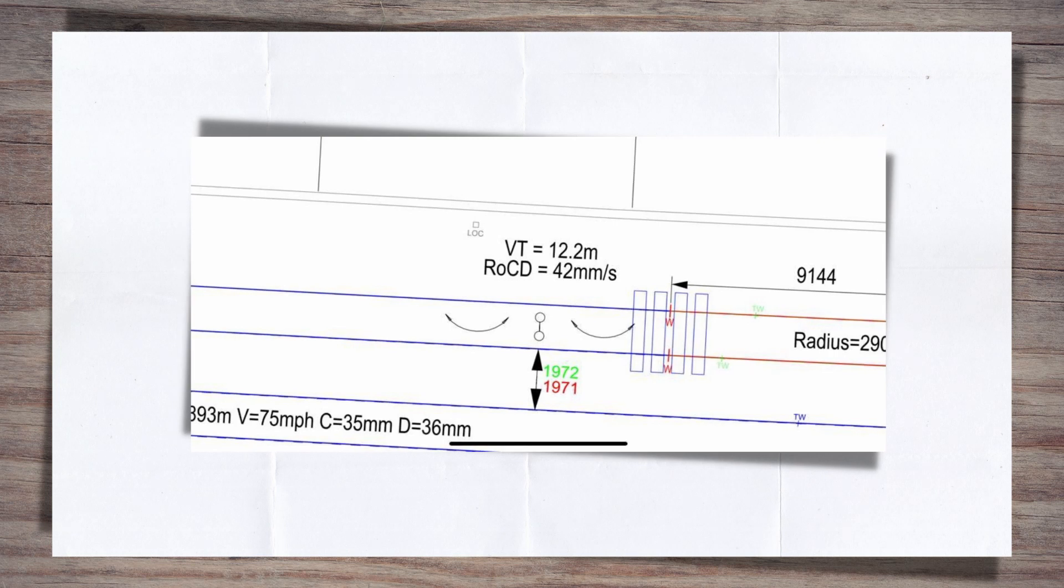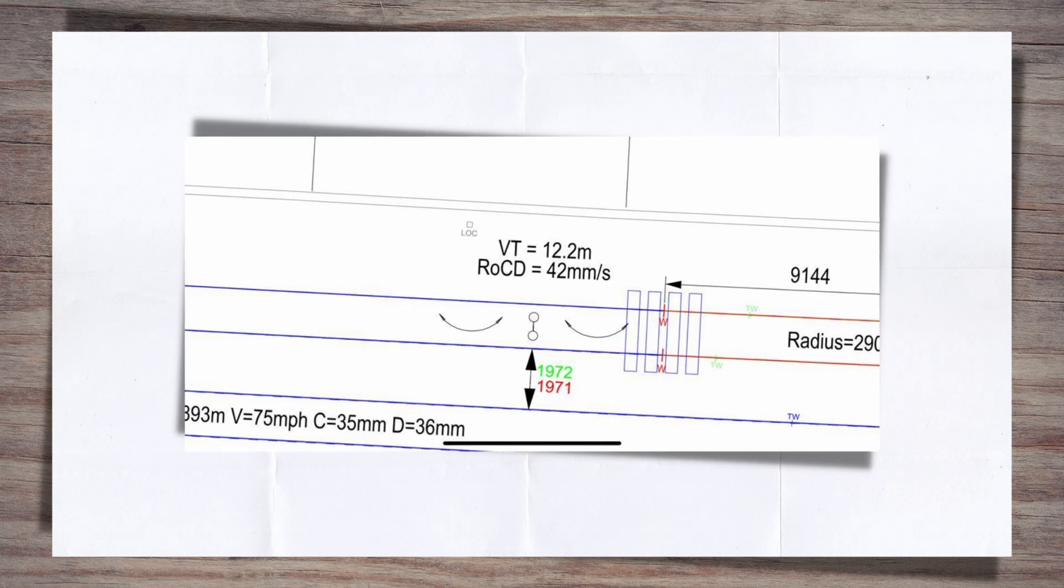Because of this fact, it's very normal to see on designs only the rate of change of deficiency stated for virtual transitions. The rate of change of cant will be zero, as there is no change in cant. This means that the rate of change of deficiency equation is the one that we'll focus on when working with virtual transitions.